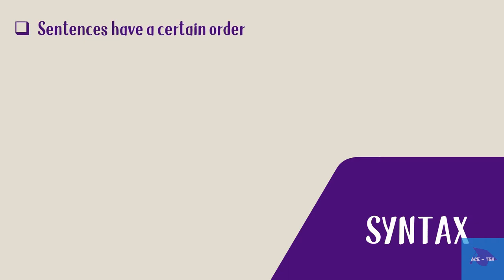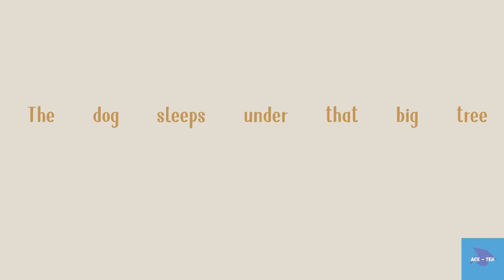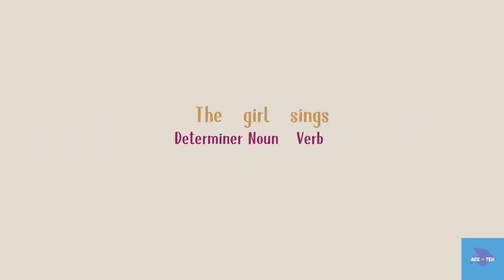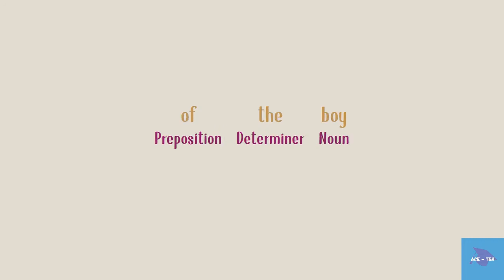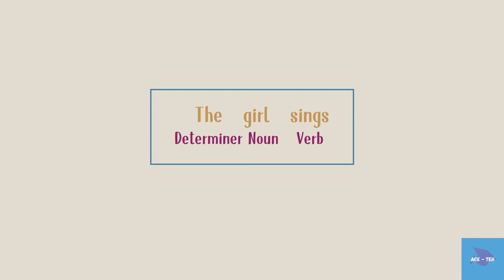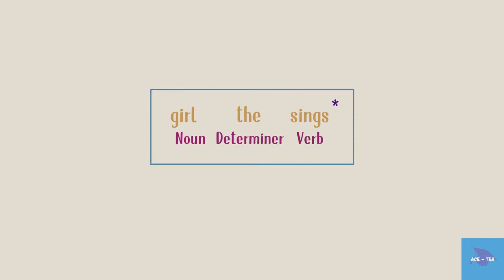Coming back to syntax, sentences have a certain order — a fixed order of word categories, meaning categories like nouns, adjectives, verbs, and so on. Take a look at this sentence and the words used here, and let's see what word category these words belong to. The study of syntax looks at the ways in which word categories can be ordered and combined. We can see that the combination of determiner, noun, verb is a sentence a speaker of English could produce — we call this a grammatical sentence. However, if we put these categories in the order noun, determiner, verb, it is not a sentence that can be produced by the rules of English, so this is called an ungrammatical sentence.